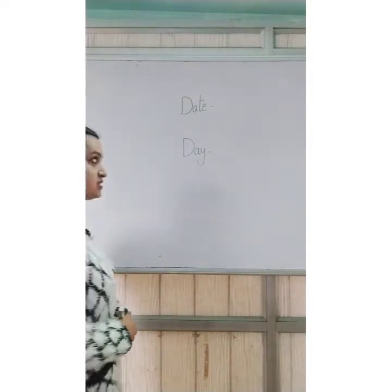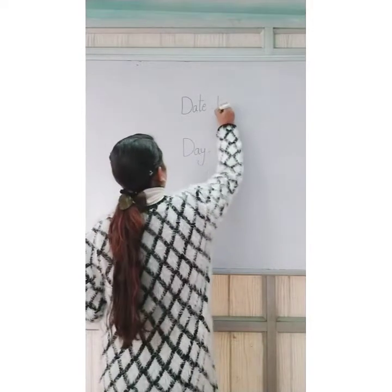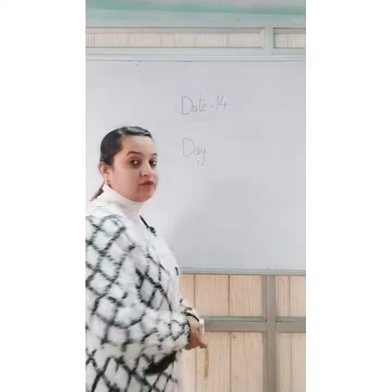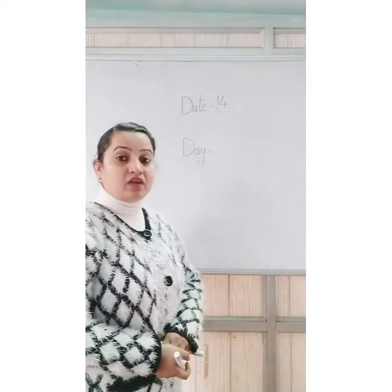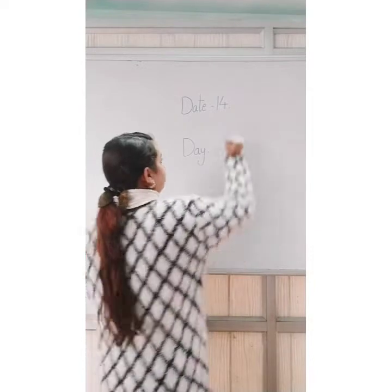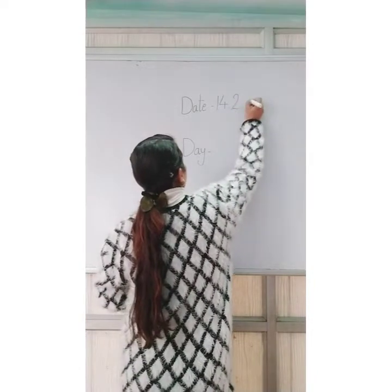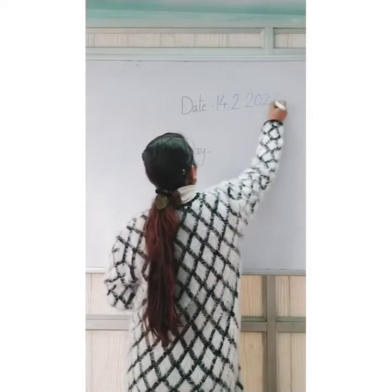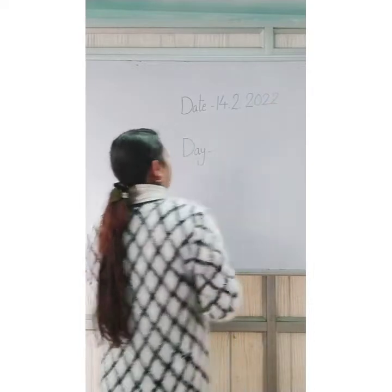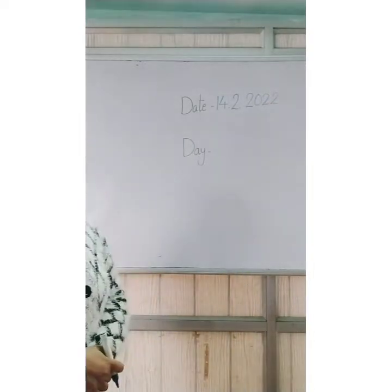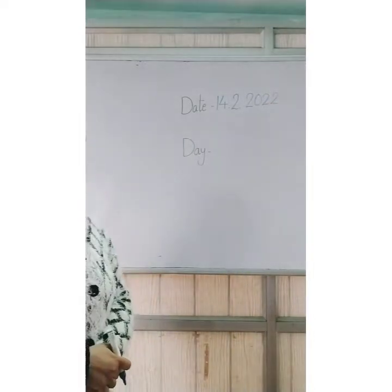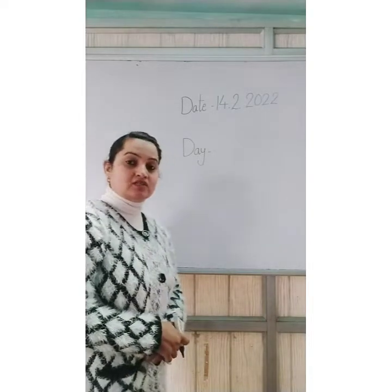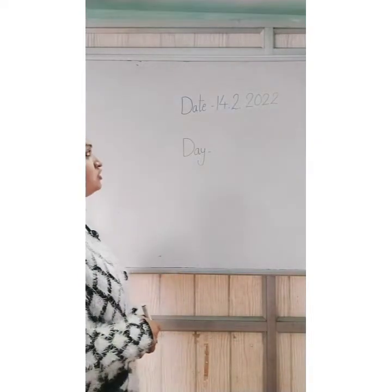Today is the 14th of February. February is the second month of the year and the year is 2022. There are 12 months in a year and February is the second month — that is why mam has written 2.